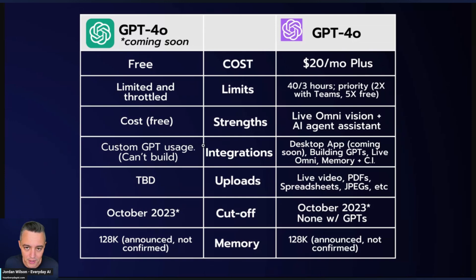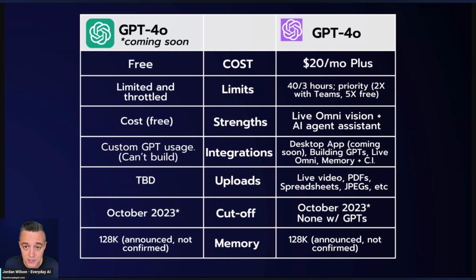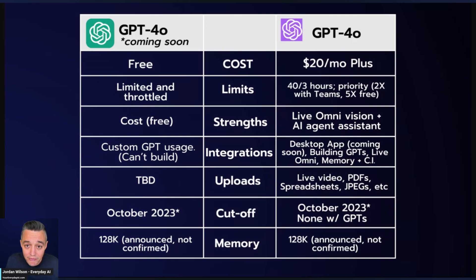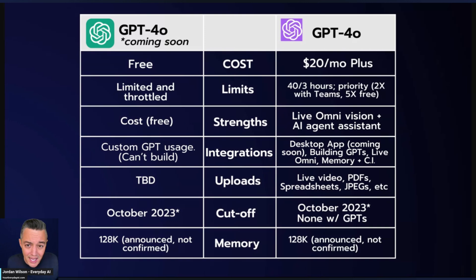The strength of the free plan is the cost — it's free, but that's really all. The strength of the paid plan is you have this new live AI assistant or AI agent that can help you. This is what OpenAI demoed. Essentially it can see whatever you're seeing, it can see you, it can read your facial expressions, and it's very emotive in the way it talks to you. You can use your front-facing camera as an example, be working on a math problem, and it can see and interact with you live. We call that live Omni vision — they didn't give it a name, but that is only for the paid plan.